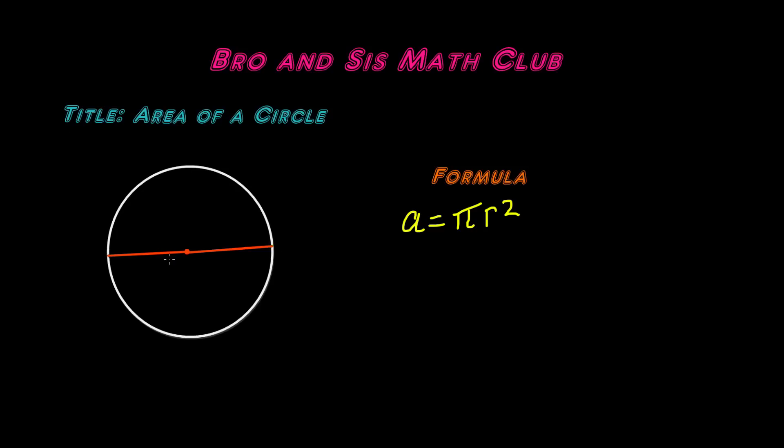But let's just go ahead and highlight the radius in a different color. Okay, so this is the radius, and if it stretches all the way through, it's the diameter. So here in our formula, it's asking for the radius because the formula says pi times radius squared.